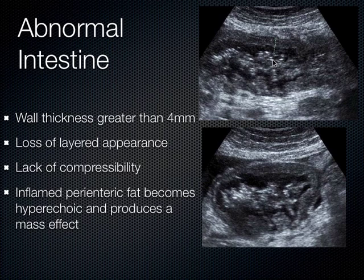Another thing that happens with abnormal bowel is loss of the layered appearance — everything kind of gets stuck together. Things get tacked down to one another and no longer slide and slip easily. In normal individuals when you compress the bowel, they're all slipping and sliding — it's called the sliding organ sign. When you have abnormal intestine, you lose that sliding, that layered appearance, and you lose the compressibility. In fact, abnormal bowel — specifically when we're talking about appendicitis — is a non-compressible tubular structure, and that's how you define it.